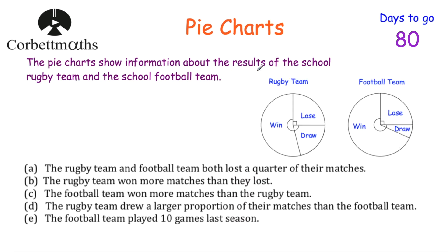We've got pie charts showing information about the results of the school rugby team and the school football team. We've got five statements and we have to say whether they are true, false, or whether we can't tell. Feel free to press pause to think about each statement. The first one says the rugby team and the football team both lost a quarter of their matches. As you can see, the rugby team did lose a quarter and the football team lost a quarter, so that's true.